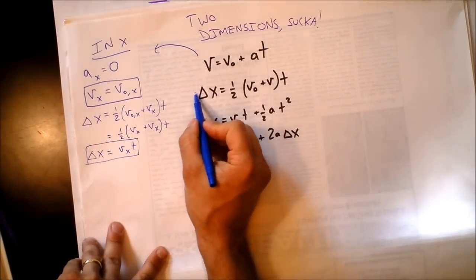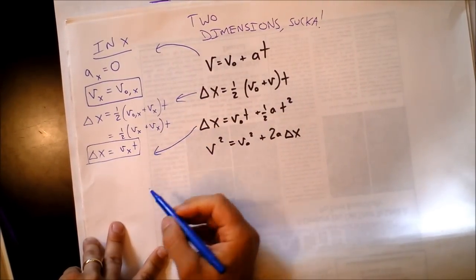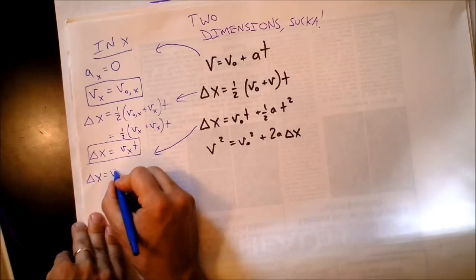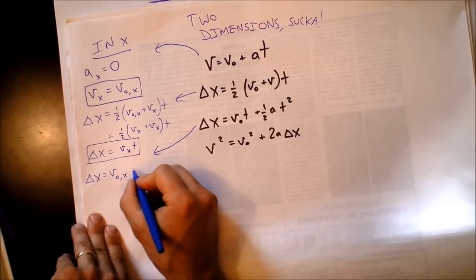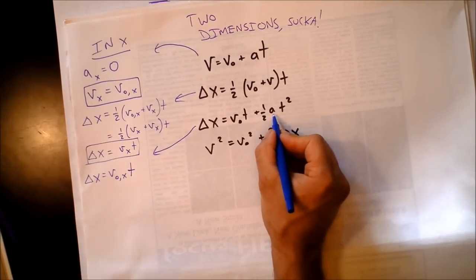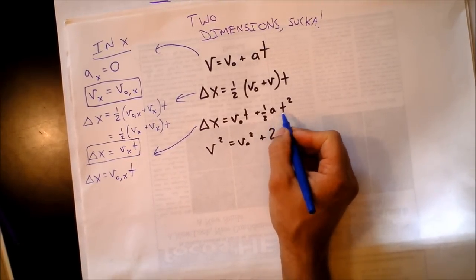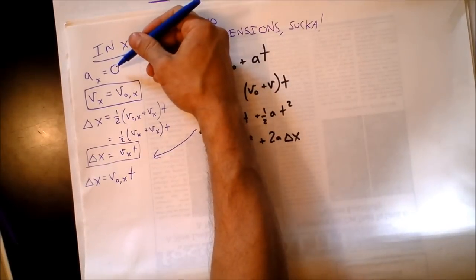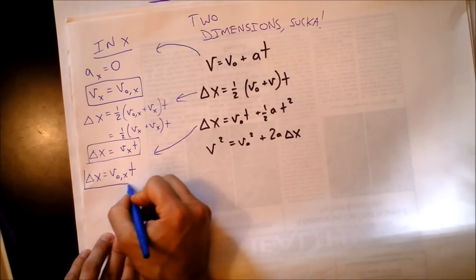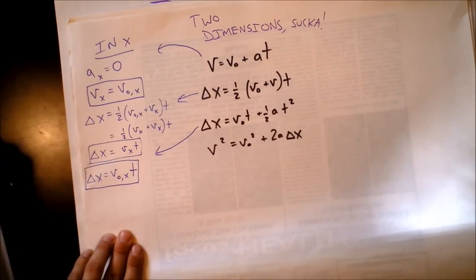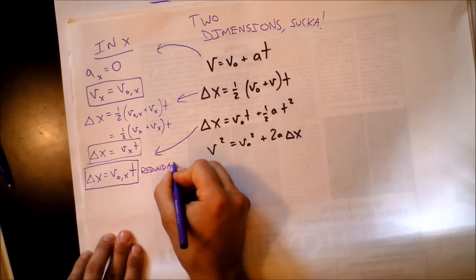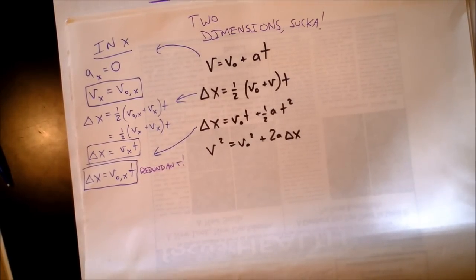Next, the classic equation: delta x equals initial velocity in x times time plus one half times acceleration in x times t squared. But the acceleration in the x direction is zero — sweet, sweet nothing. So we get the same equation again: delta x equals v_x times t. We're essentially wasting our time with that one. The x direction is fantastically simple.